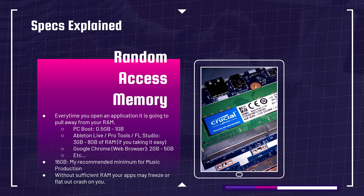32GB is a really strong sweet spot, but a lot of thin-and-light ultrabooks only offer 16. I wouldn't get a thin-and-light ultrabook with 8 gigs — start at 16 at a minimum for any laptop. I personally recommend 32 if your budget allows. Without sufficient RAM, your apps may freeze or flat out crash, so RAM is very important for your music production laptop.